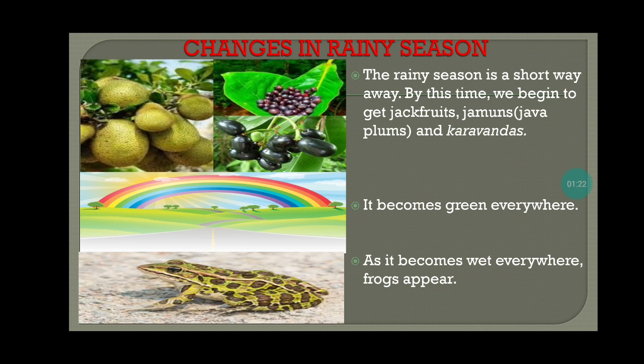Changes in rainy season. By this time, we begin to get jackfruits, jamuns — means java plums — and karwandas. It becomes green everywhere. As it becomes wet everywhere, frogs appear.